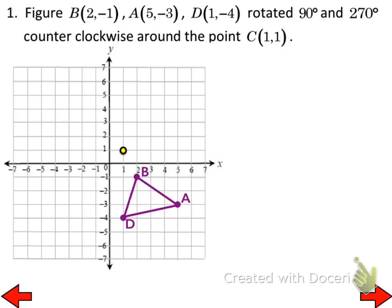You can't use the counterclockwise rotation coordinate rules if it's not about the origin — at least not the way they're written. But what if we were to create what I'm going to call a fake x-axis and a fake y-axis that go through the point of rotation? Let's create a new fake y-axis and a fake x-axis.